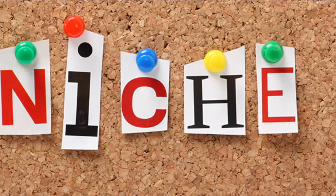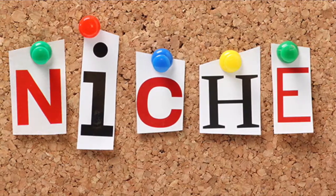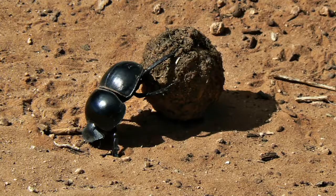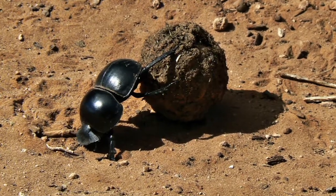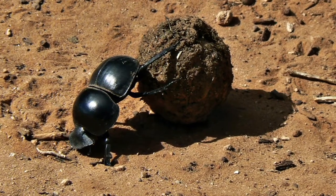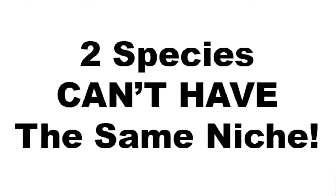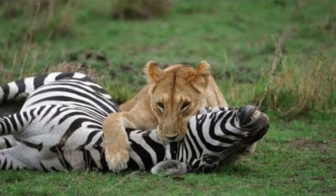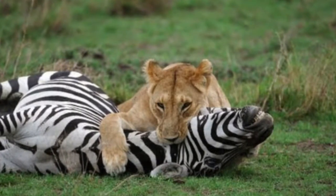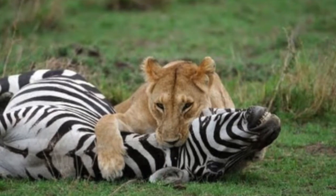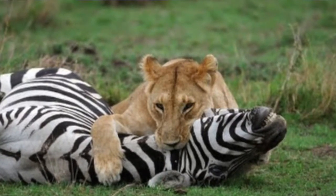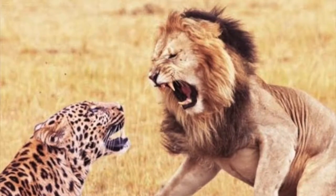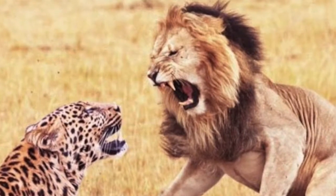Every organism in an ecosystem has their own niche. An organism's niche is all the jobs and effects the organism has on its environment and its ecosystem. No two species can have the same niche, at least for that long. For example, if cheetahs and lions were both hunting for zebras in the same ecosystem, most likely these two species of animals will compete for the resource of zebras.